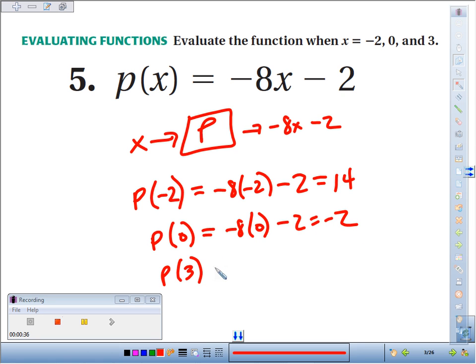p of 3, we take negative 8 times 3, which is negative 24, minus 2 more is going to be negative 26.